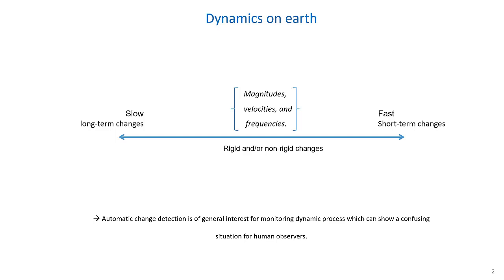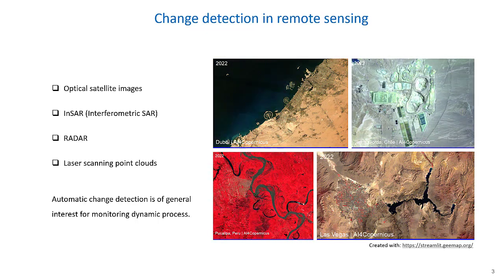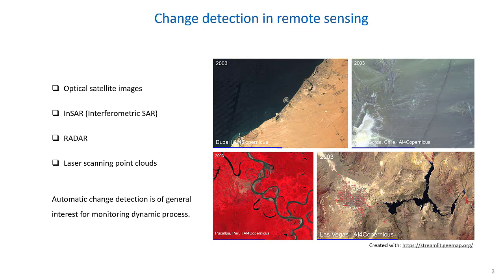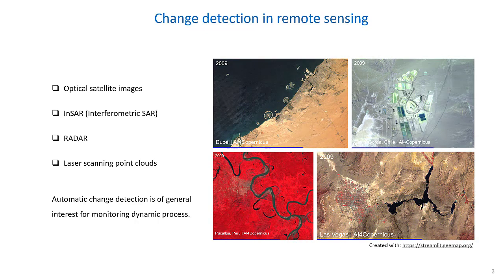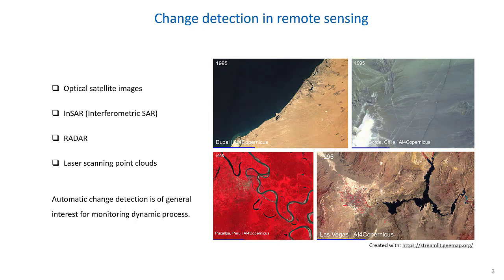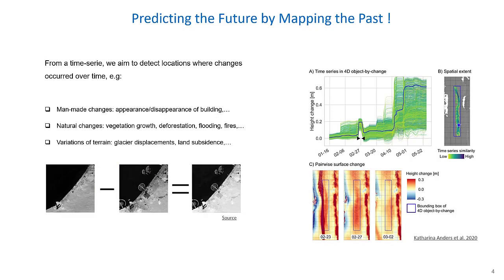Automatic change detection is of general interest for monitoring dynamic processes which can show a confusing situation for a human observer. For example, some phenomena take many years to become visible to humans. As we have seen today in several presentations, we have more and more satellite optical images or SAR radar images. We can create a time series of images to make change visible over time. Using these images, we can today create time series for every pixel to show the trend of changes, which makes it possible to predict some evolution or trend in the future.